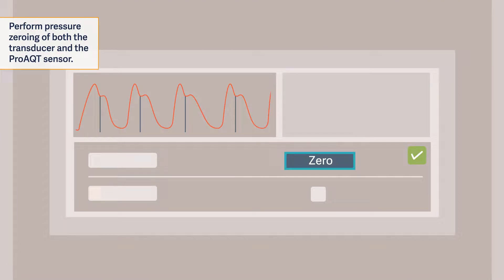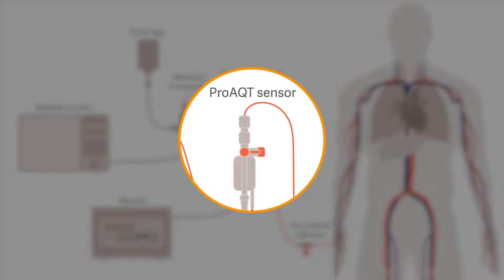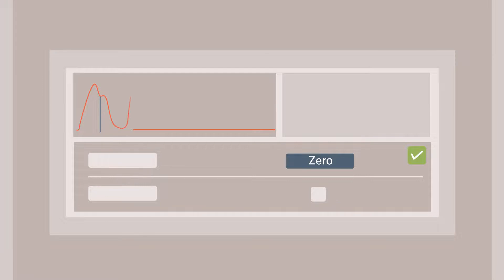Tap the zero button on the monitor. Close the arterial system for the measurement. The pressure curve reappears on the monitor.